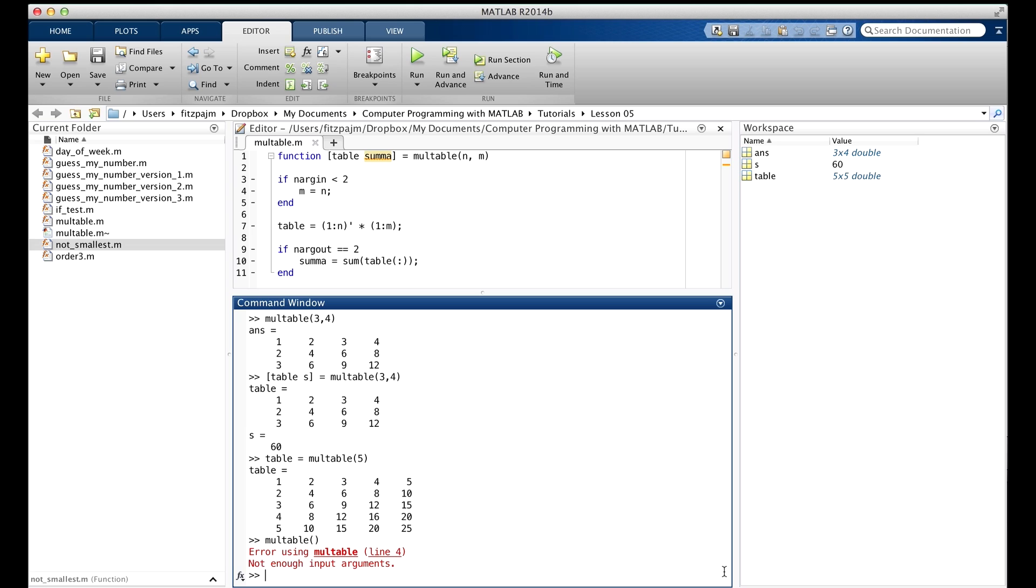Well, we managed to make it fail by giving it no argument at all. MATLAB tells us the line on which the failure occurred, and we can see what happened on that line. Right here. When MATLAB tried to look up the value n, it found no value n. Because we gave it no value.